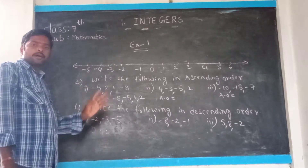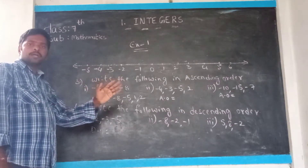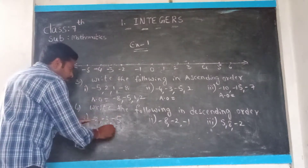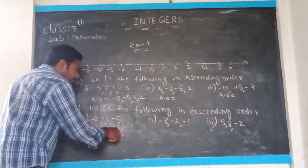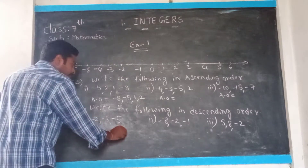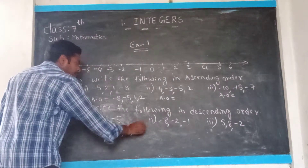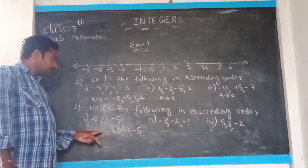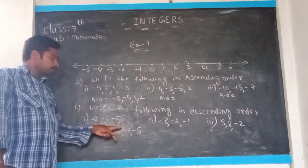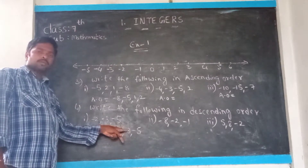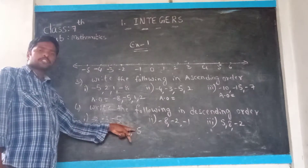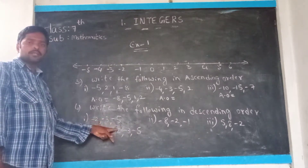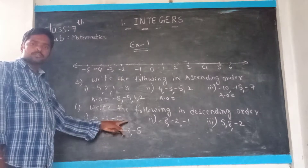Already I told you — minus small number is the big one, and minus big number is the small one. So out of these numbers, what is the big number here? Minus 2 is the big one, and next is minus 3, and next we have minus 5. So you write big number to small number: minus 2 is the big one, next minus 3, and next minus 5. This is called descending order — big number to small number.